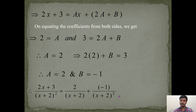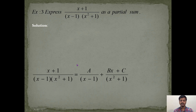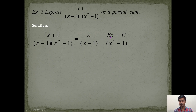Example 1 was on type 1 and Example 2 on type 2. To make it more interesting, Example 3 will be a combination of type 1 and type 3. Express (x + 1) / [(x − 1)(x² + 1)] as a partial sum. This is a combination because we have a linear factor as well as a quadratic expression.